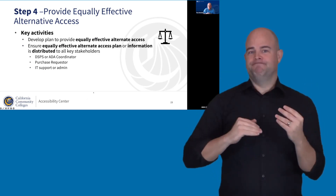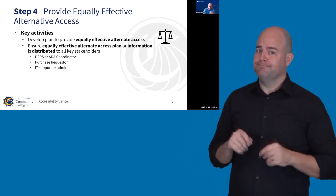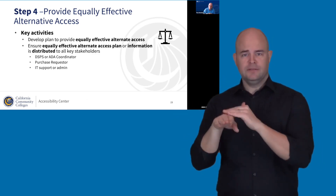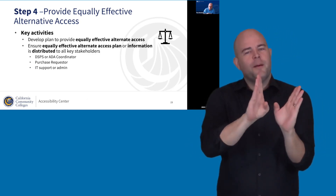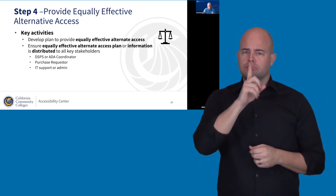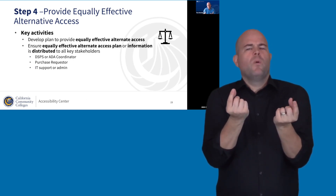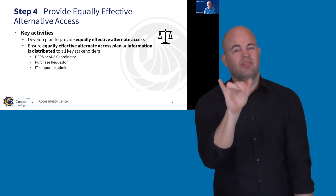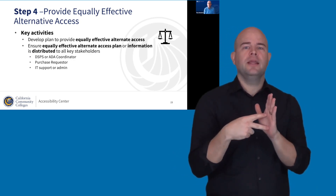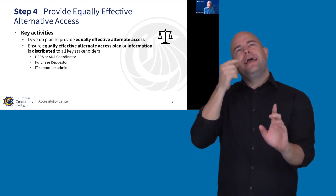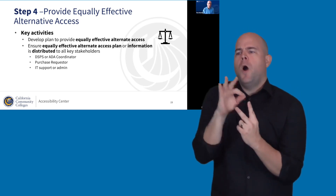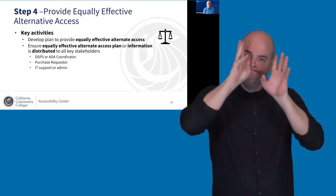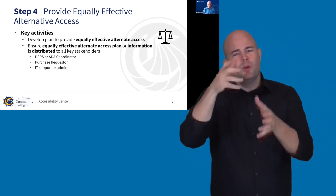Step four is really critical: we are obligated to provide equally effective alternate access for ICT we buy that's not fully accessible, and we do that by developing a plan. A common mistake is saying in a document that you're going to provide an accommodation and calling that a plan — that's not a plan. A real plan means thinking upfront about how to provide an equally effective alternate way of accessing the same information or benefits. This is not easy — it requires creative people and experts who understand the learning objectives.